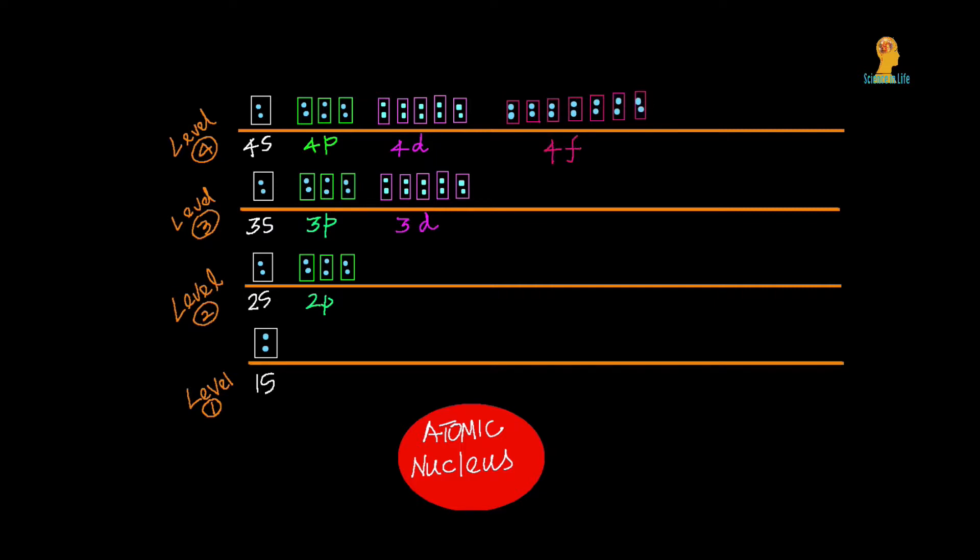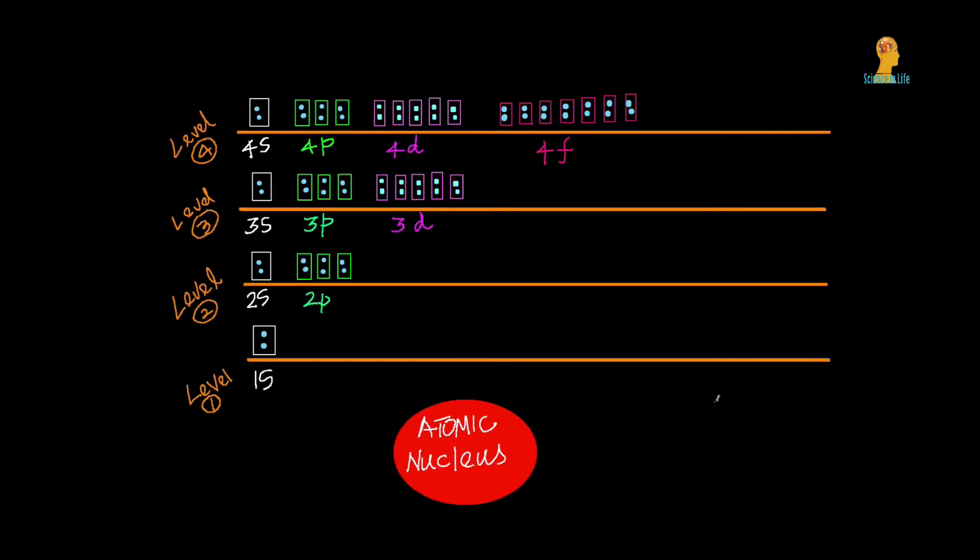The maximum allowed number of electrons in each shell or energy level is different. The first level can have only two electrons, the second level can have eight, the third level can have eighteen, and the fourth level can have thirty-two electrons.